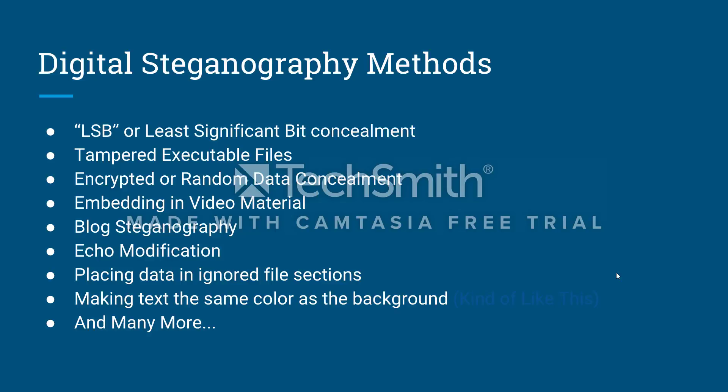Here is a list of some methods digital steganographers use to hide messages or files. The first is LSB, or least significant bit concealment, which will be demonstrated in the next slide. The next is tampering with executable files, followed by concealing encrypted or random data. A popular method is to embed files in video material or within audio material via echo modification. A simple online method is blog steganography, or separating a message and scattering its contents across multiple websites for someone to reassemble. Another method is to place data in ignored sections of a file, or to make text the same color as the background. This list is only a small portion of the much longer, possibly infinite, list of methods steganographers can use.